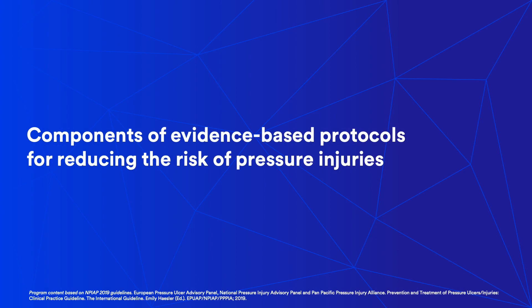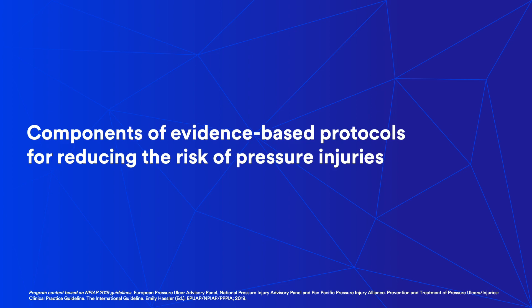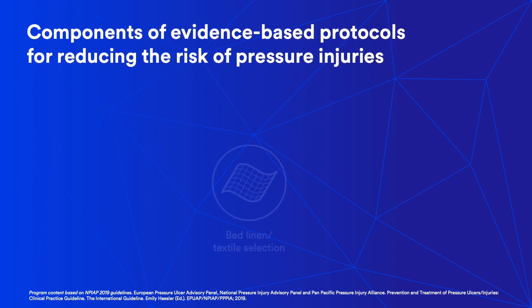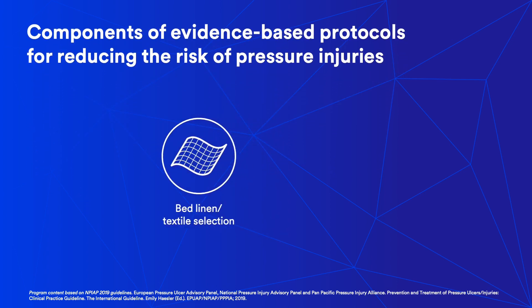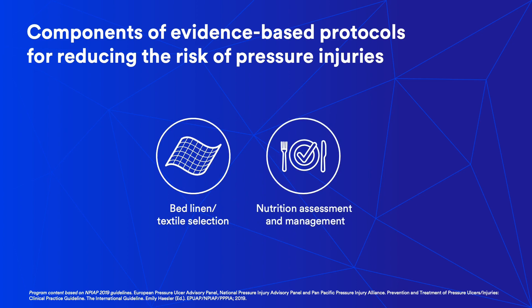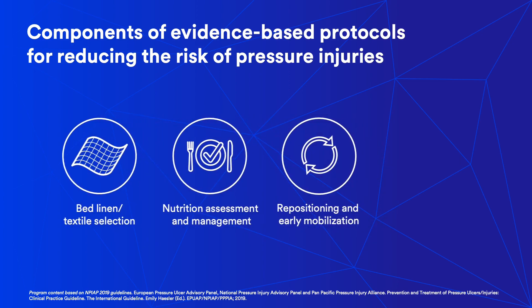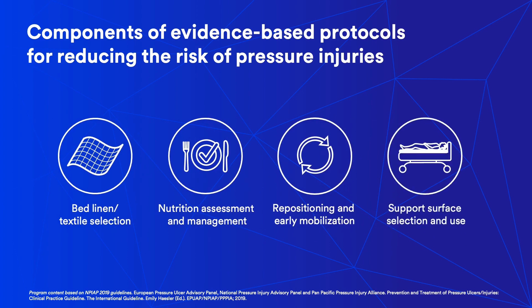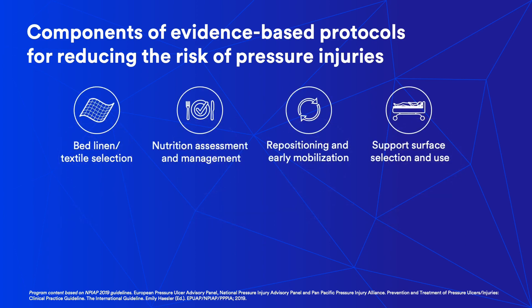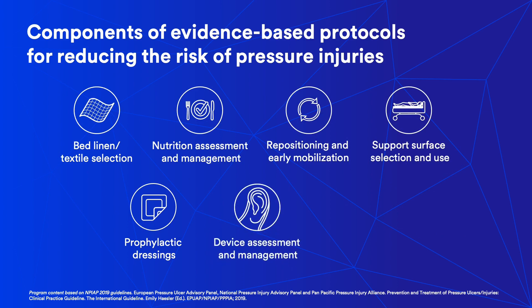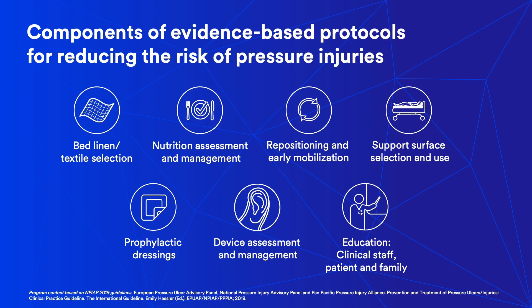In addition to a thorough skin assessment and structured skin care regimen, the NPIAP and partner organizations recommend the following components to mitigate risk of pressure injury development: bed linen and textile selection, nutrition assessment and management, repositioning and early mobilization, support surface selection and use, use of prophylactic dressings, device assessment and management, and education for clinician staff, patient, and family.